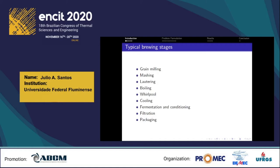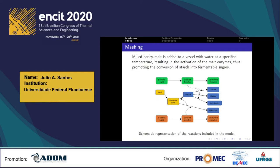The brewing process is the production of beer. It starts with a cereal grain that is a source of starch, which can be converted to fermentable sugars. Brewing consists basically of the stages shown in the slide. In this study we focus on the mashing phase — that is, the addition of milled barley malt to a vessel called a mash tun with water at a specific temperature. These conditions provide the activation of the malt enzymes and the conversion of starch into fermentable sugars, as we can see in the figure.